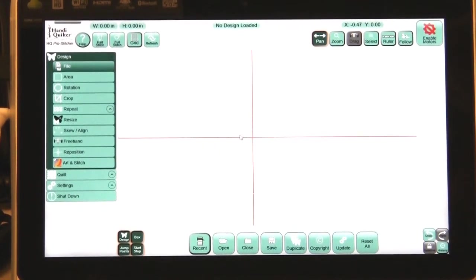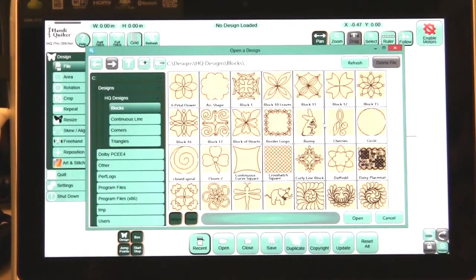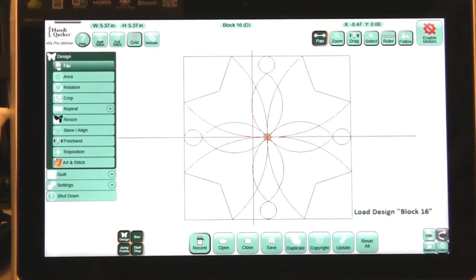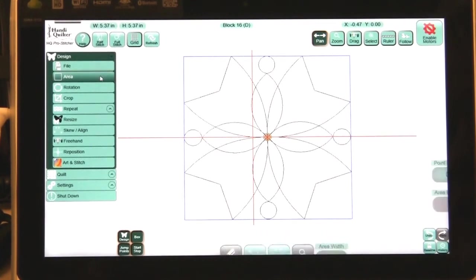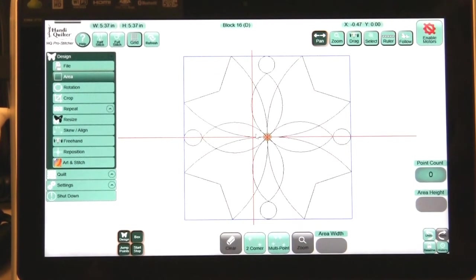This is a new feature being released for the HQ Pro Stitcher in June of 2013. I'm going to bring in a design. I want to use the block 16 and in my area I can now skew to more than 4 points.